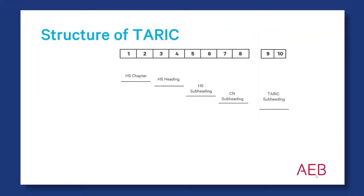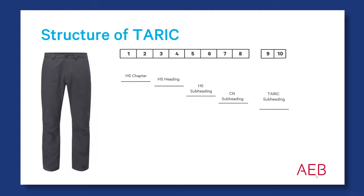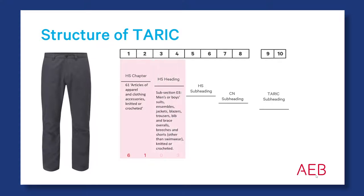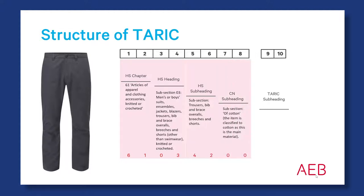Here you see the structure of the Commodity Code. If you search the correct code for men's trousers, made of cotton and knitted in its construction, you'll need to navigate to Chapter 61, Apparel and Clothing. In the HS heading, you choose between men and boys' trousers. In the subheading, you define trousers, and finally select the material cotton. This gives us the Commodity Code of 61034200.